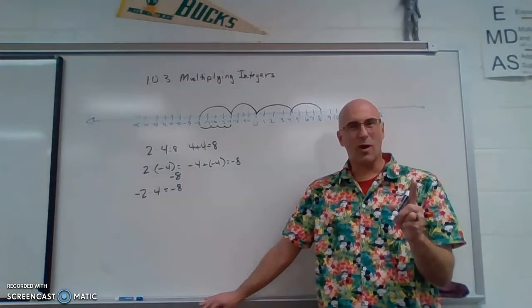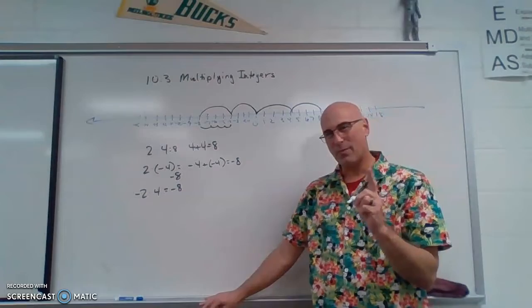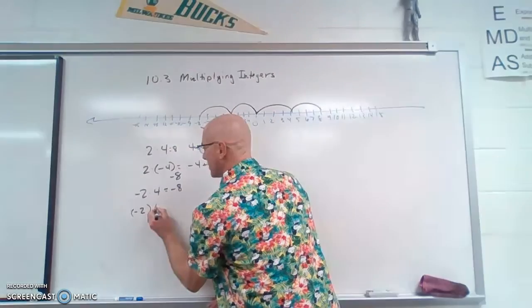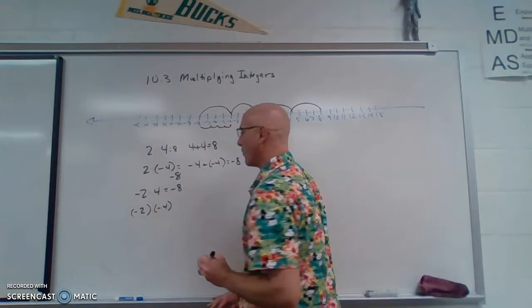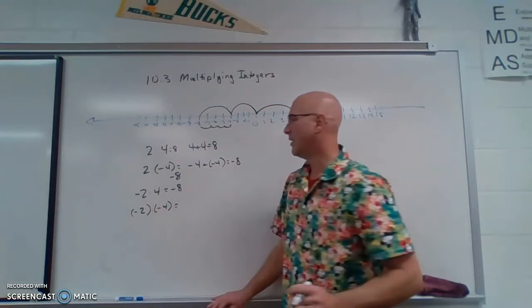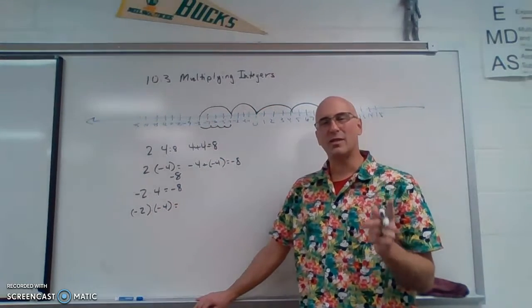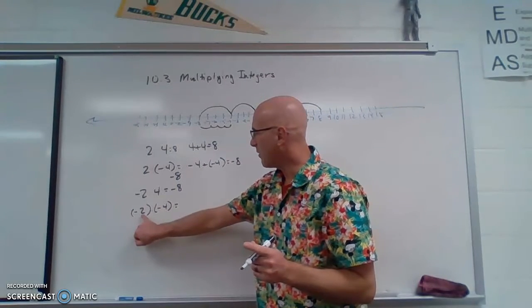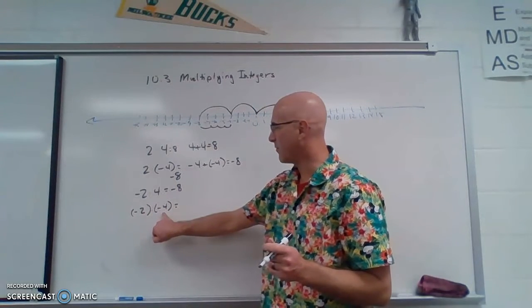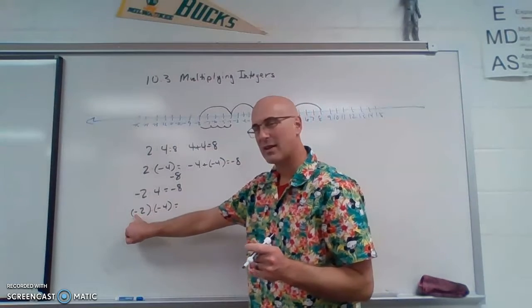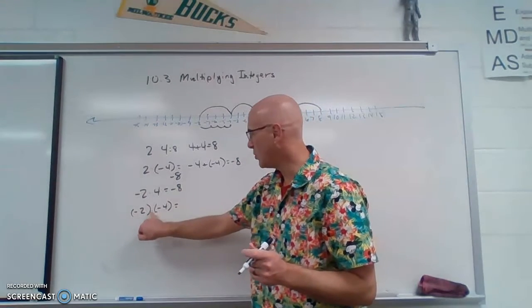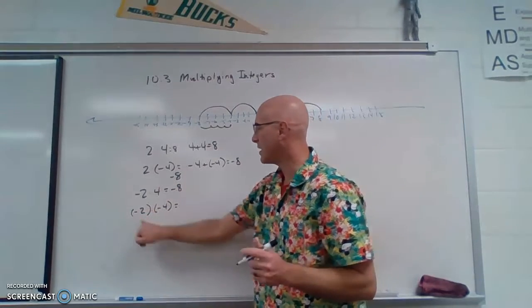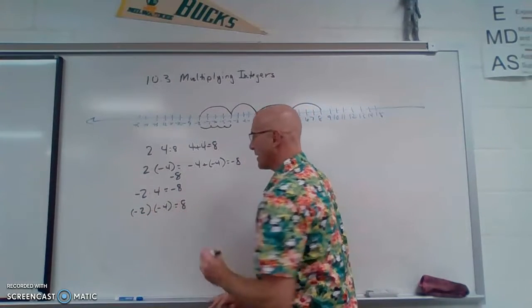Now there's one more example. What happens if you have negative 2 times negative 4? The way we can read that is we have two groups of negative 4 and we take the opposite. So 2 times negative 4 is negative 8, but we're going to take the opposite of that. So that is 8.